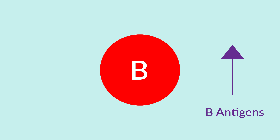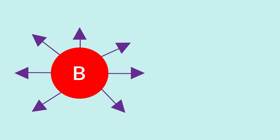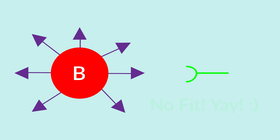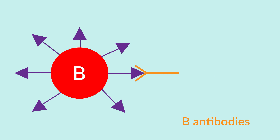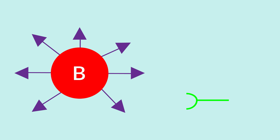For the B blood cell type, the same relationship is true but vice versa. The B blood type has B antigens, located on the B cell's outer surface. The B cells have a very happy relationship with the A antibodies in the plasma because they don't fit — they're different. If B antibodies were present with the B antigens, they would bind and kill the red blood cell. We want our B antigens and A antibodies to live long lives together.